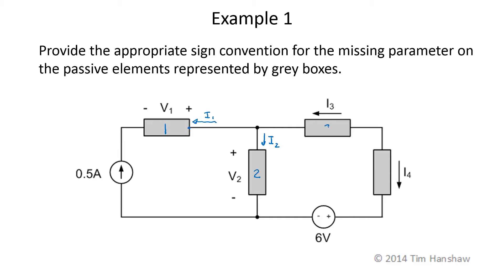In element 3, we're given a current direction that we are to interpret as positive. Current is going to be entering the terminal on the right of this element, so that has to be where our assumed higher voltage is, and for element 3, that will be the voltage polarity.